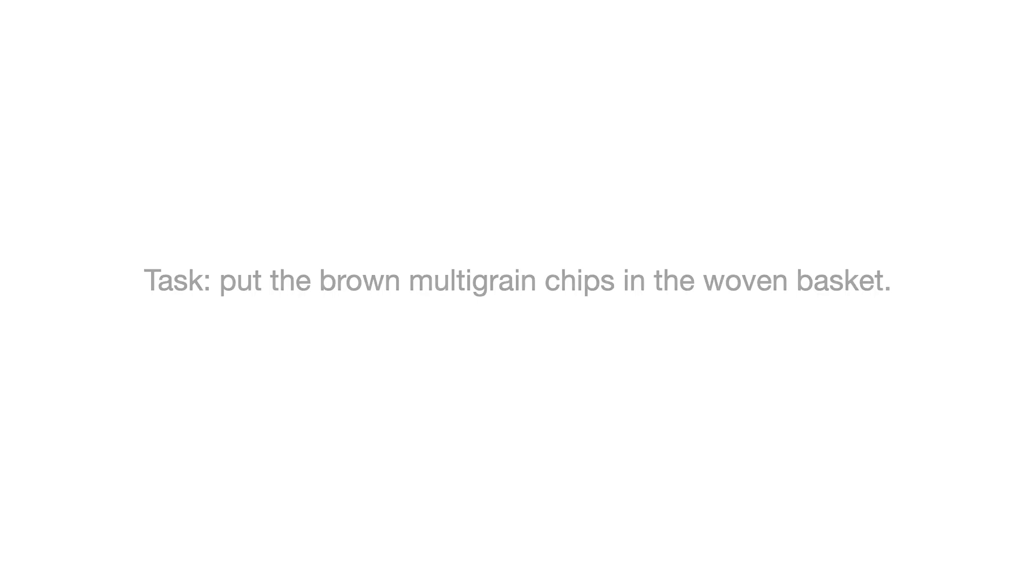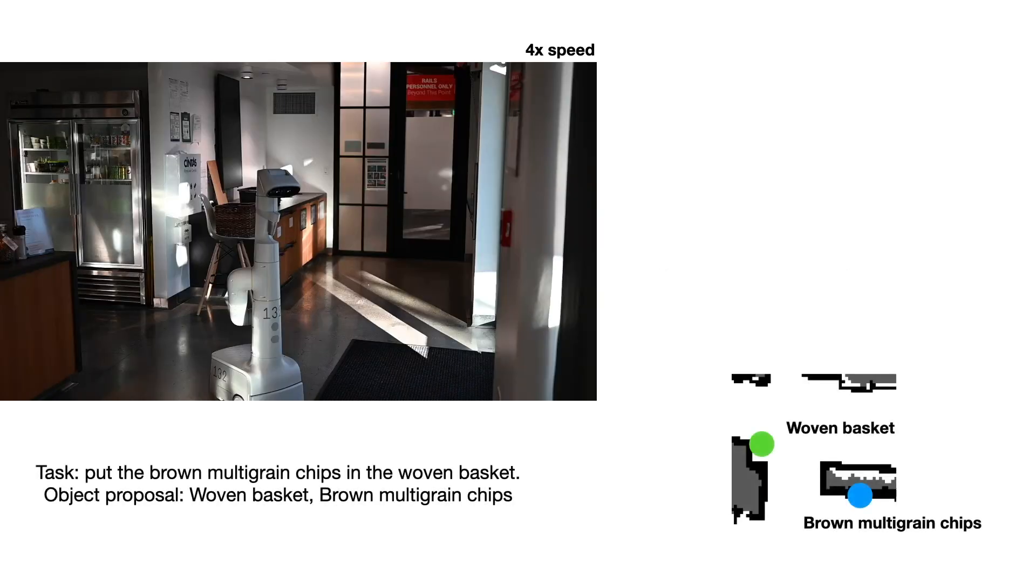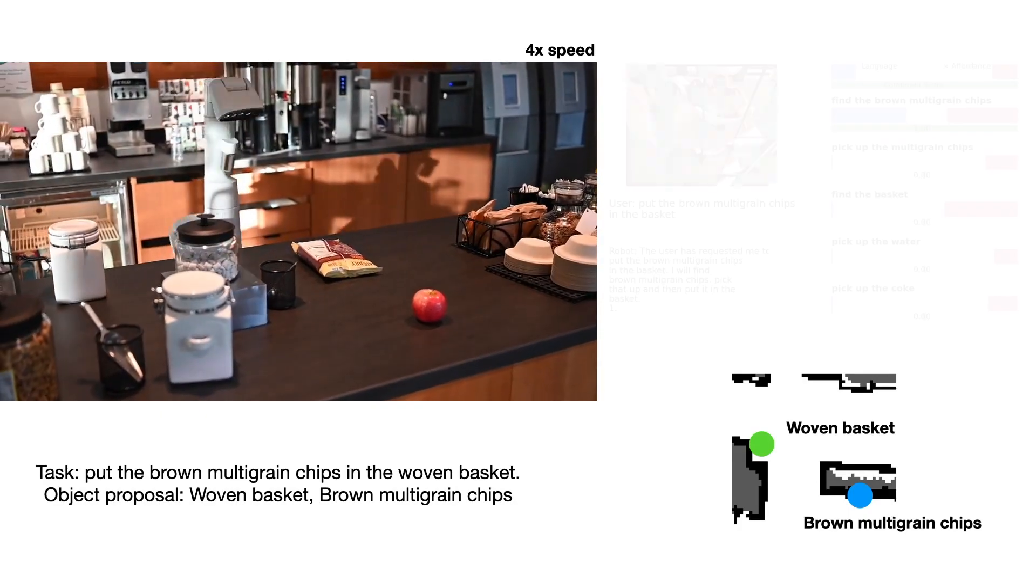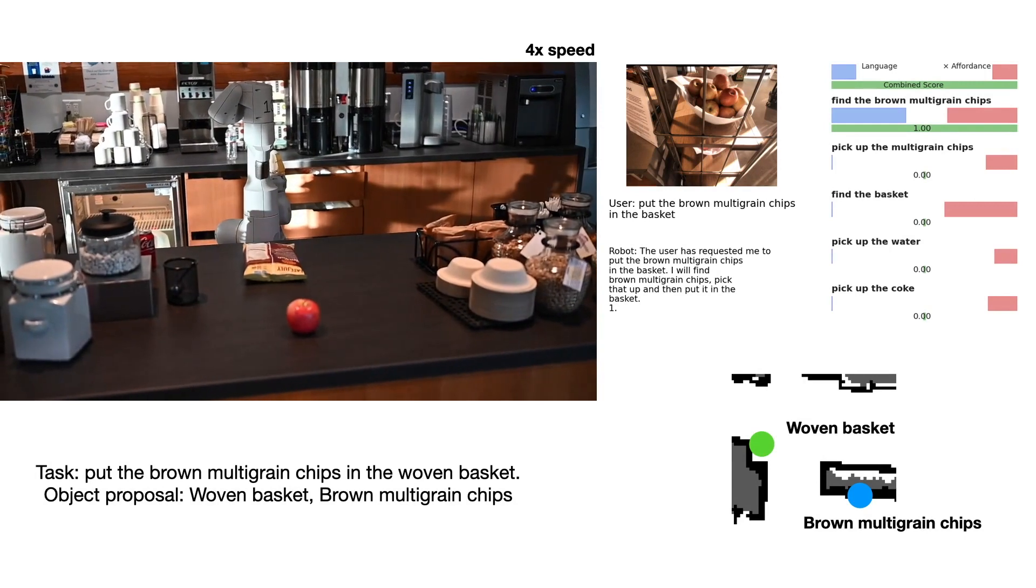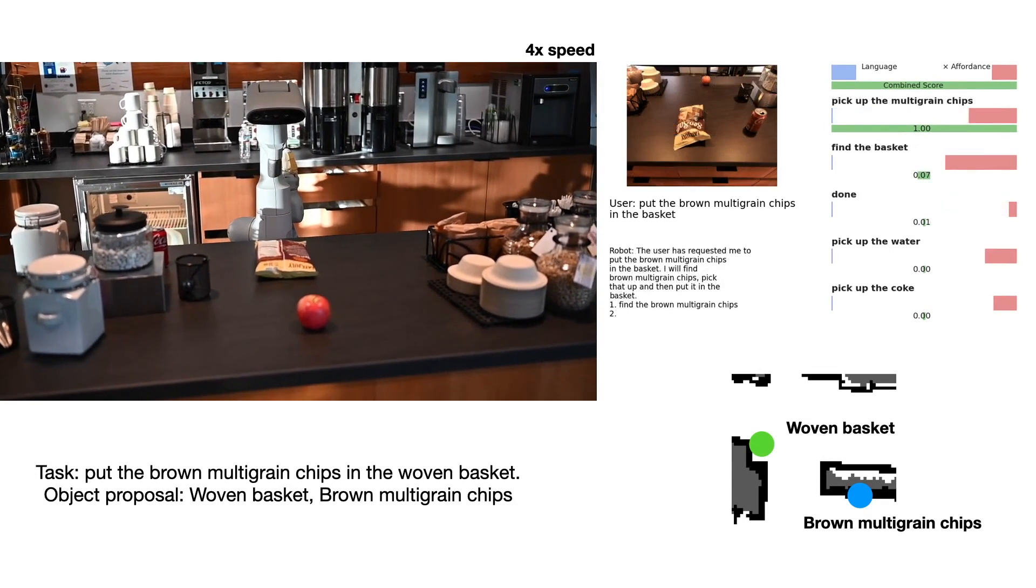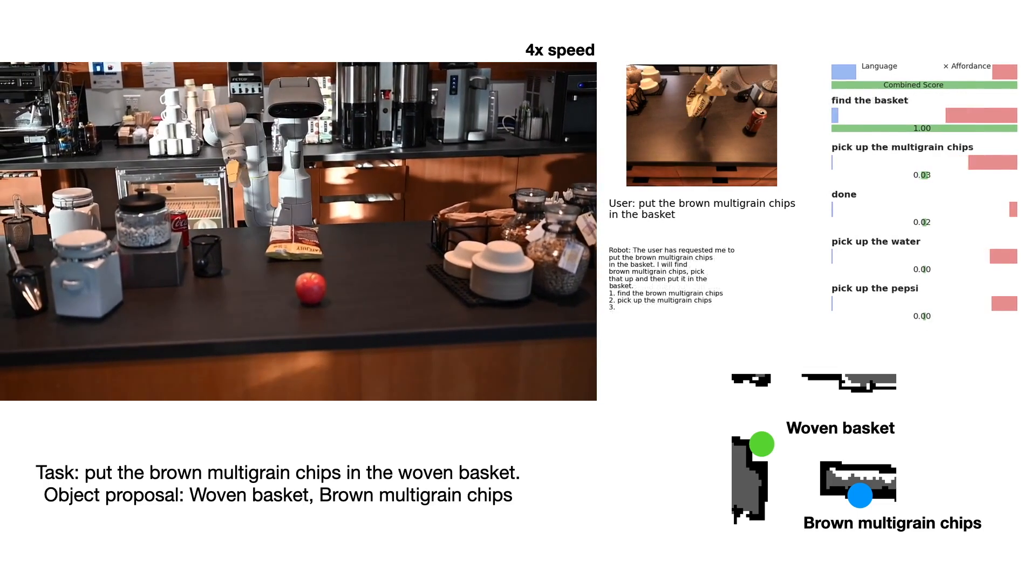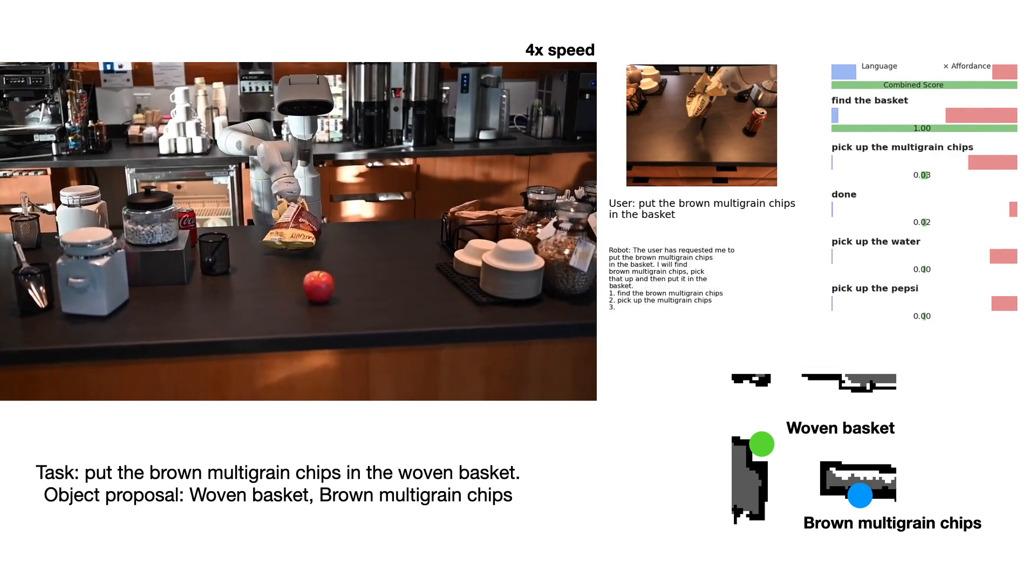In this demo, the human gives an instruction to put the brown multigrain chips in the woven basket. The robot proposes two objects, woven basket and brown multigrain chips, to look up in the scene representation. As visualized in the map at the bottom right, both objects are found and localized.